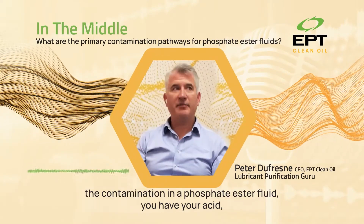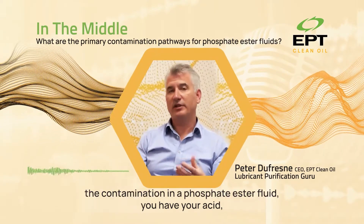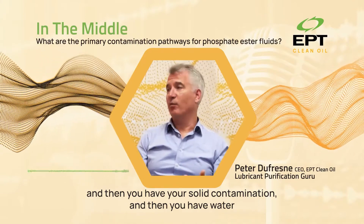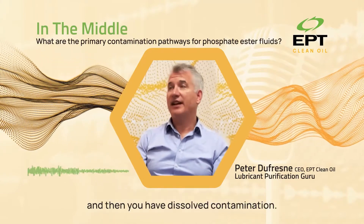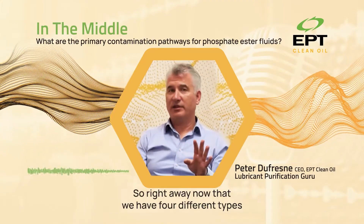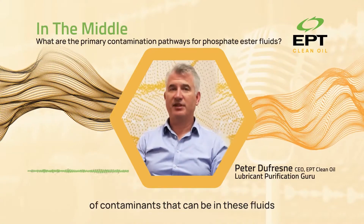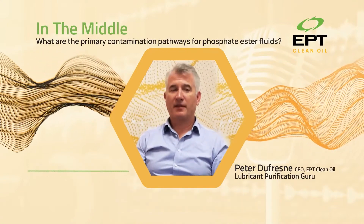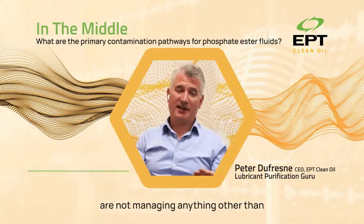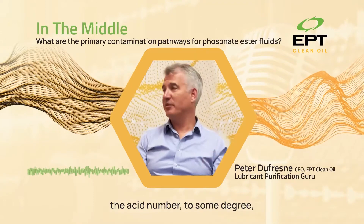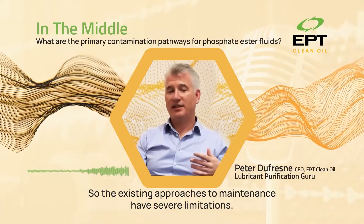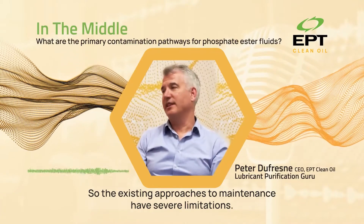Generally, if you're going to classify the contamination in a phosphate ester fluid, you have your acid, and then you have your solid contamination, and then you have water, and then you'd have dissolved contamination. Now that we have four different types of contaminants that can be in these fluids, you'll find that existing systems are not managing anything other than the acid number, to some degree, and the solid contamination, to some degree. So the existing approaches to maintenance have severe limitations.